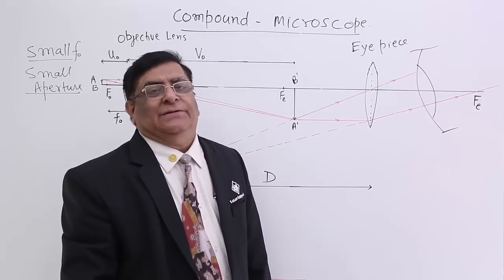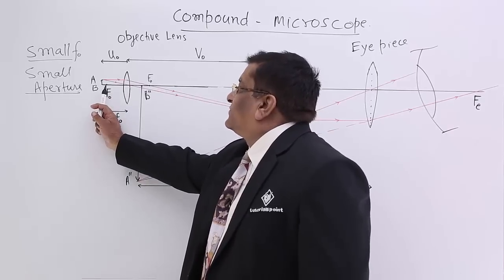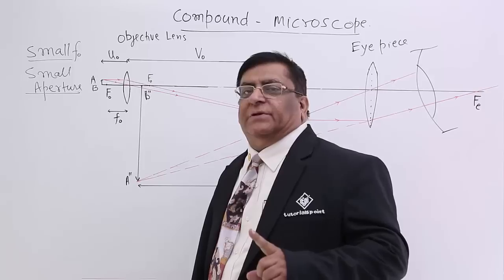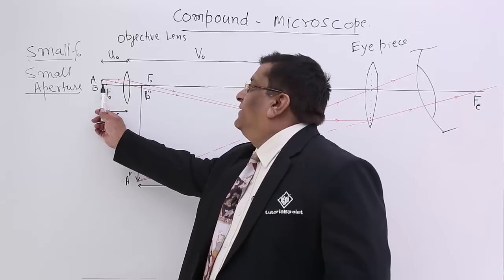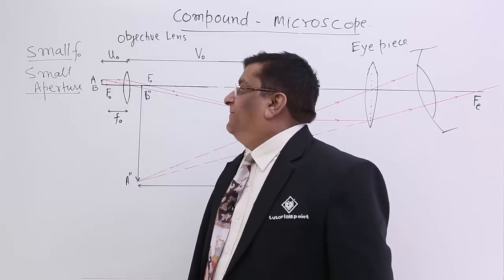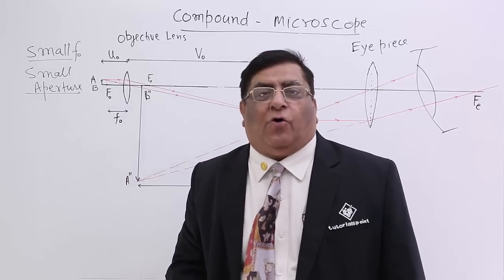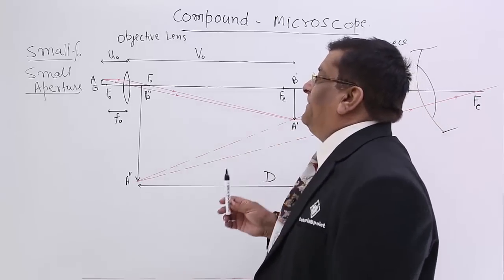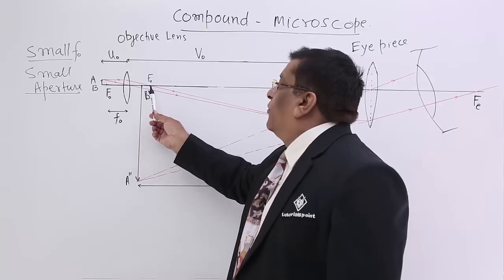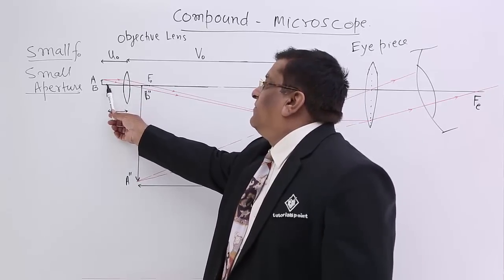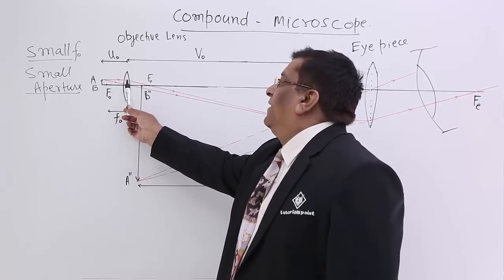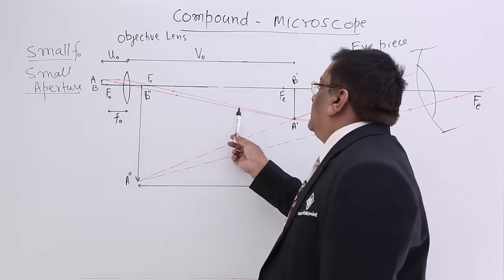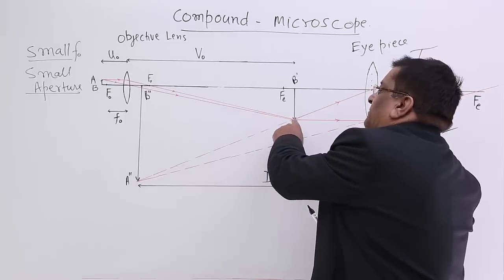Now how do we do the setting? The object is placed slightly outside the focus, but not very much outside. When we place it there, where will the image be formed? The image will be formed on the other side. One ray which comes parallel will go through the focus of this lens. Another ray passing through the optical center will go straight, and both rays converge and meet at a point.